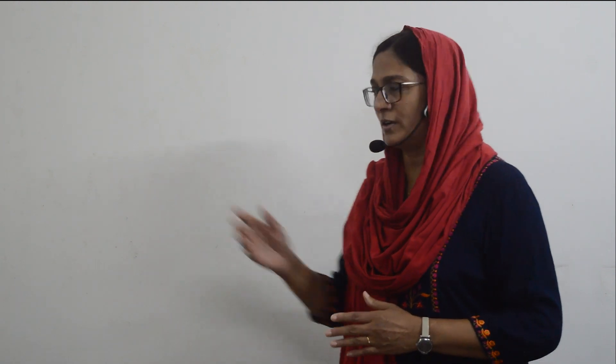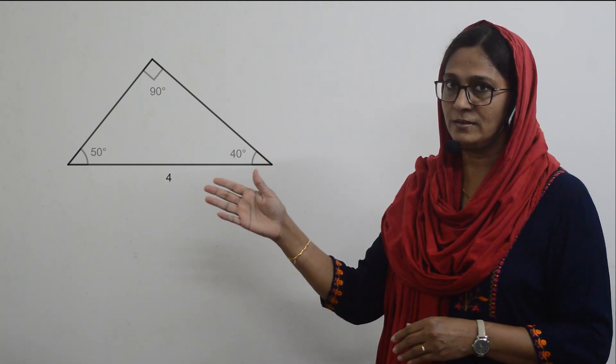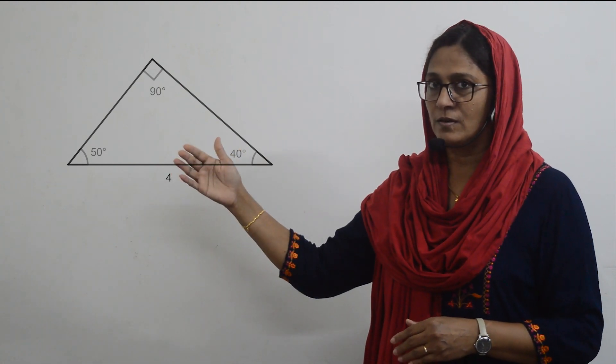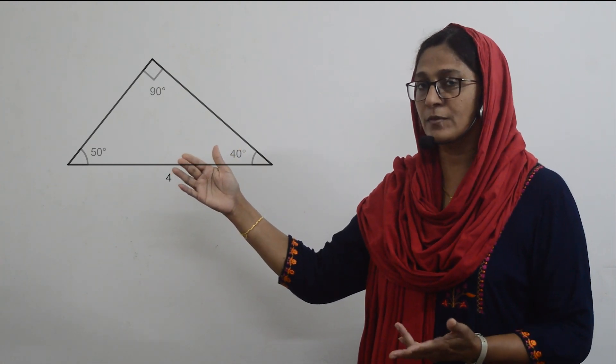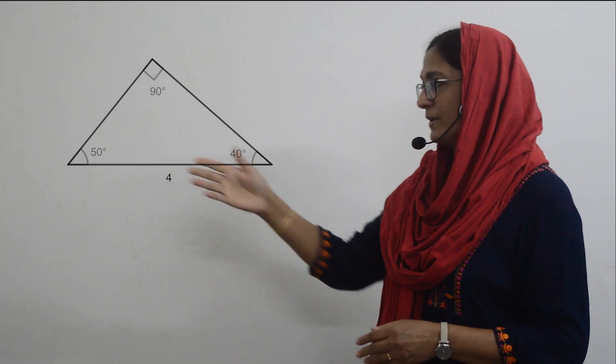Let's first try to draw a right triangle with its hypotenuse four centimeters. Since it's a right triangle, one of its angles is surely 90 degrees, so it's enough that the sum of the other two angles is 90 degrees. We draw a line 4 centimeters, take an angle at one end, and at the other end take 90 minus that angle, just like I have drawn here. Please see the figure.